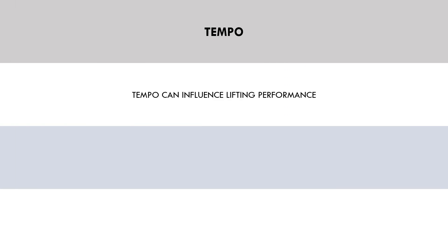Another variable which influences lifting performance but isn't indicative of stress is lifting tempo — the speed or duration of each repetition. Tempo can influence lifting performance without necessarily increasing muscle stress. For example, a trainee can perform a bench press with a fast bounce at the bottom, or with a controlled tempo for the entire repetition. With a fast tempo at the bottom range, the trainee takes advantage of the stretch-shortening cycle and can probably lift more weight or perform more reps. However, this doesn't mean stress on the chest is greater — in fact, stress to the chest fibers will probably be greater using a more controlled tempo with a lighter load.